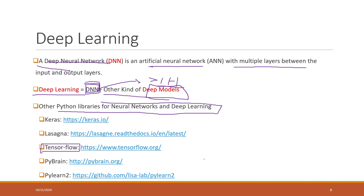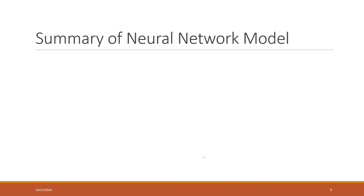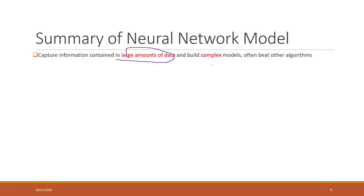To summarize neural networks: they can capture information contained in large amounts of data and we can build very complicated models that often beat other algorithms. Neural networks and tree-based models are currently the two most powerful types of machine learning models. However, neural networks may take a very long time to train because we have potentially thousands of neurons in the network.